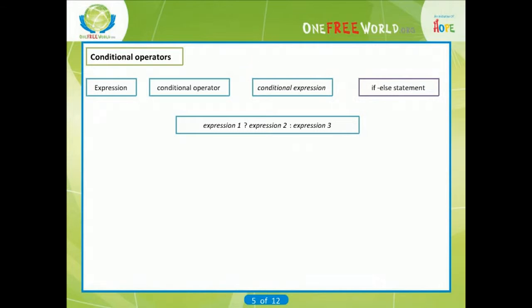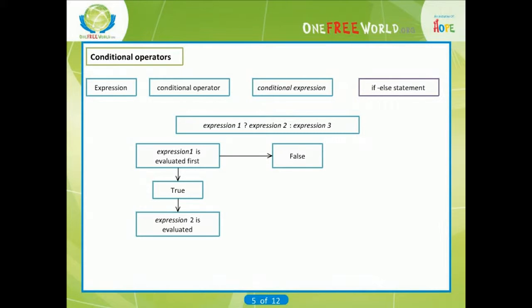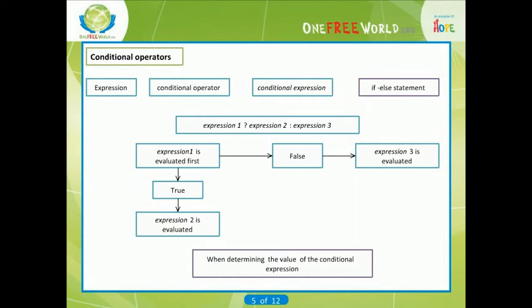When evaluating a conditional expression, expression 1 is evaluated first. If expression 1 is true, that is, if its value is non-zero, then expression 2 is evaluated and this becomes the value of the conditional expression. However, if expression 1 is false, that is, if its value is zero, then expression 3 is evaluated and this becomes the value of the conditional expression. Note that only one of the embedded expressions, either expression 2 or expression 3, is evaluated when determining the value of a conditional expression.